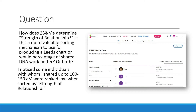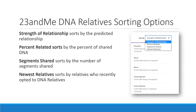The questioner noticed some individuals with whom they shared up to 100 to 150 centimorgans were ranked low when sorted by strength of relationship. This question came from a Research Like a Pro with DNA study group member, and we're going to look at some of the help articles at 23andMe to see if we can answer what strength of relationship means and determine which is the best way to sort when trying to find second and third cousins to do the leads method.